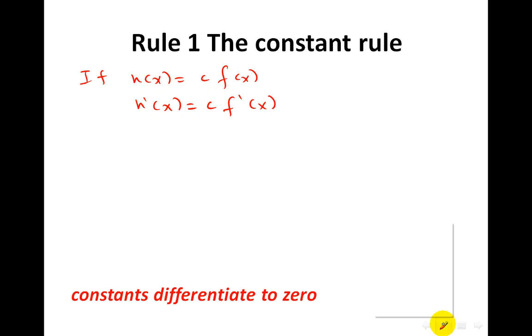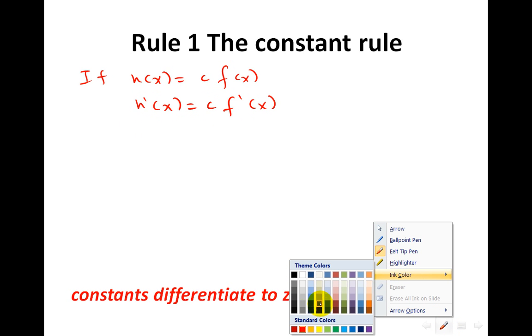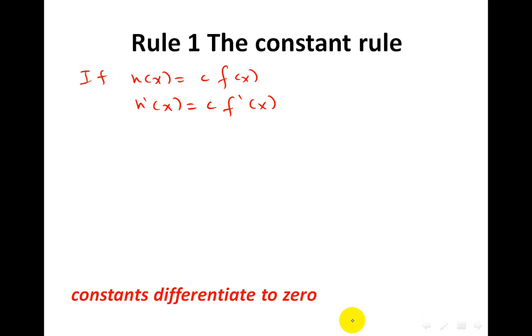If you have h of x equals to c times f of x, where c is a constant number, then h derivative of x will be c times f derivative of x. Let's have some examples on this one.